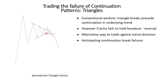The failure of the continuation breakout can sometimes be anticipated. First, it is important to look at correlating markets. For example, the Aussie dollar may have broken down a few days ago but the New Zealand dollar is attempting to break out of a triangle pattern. In this case, the breakout attempt in the New Zealand dollar may prove to be a bull trap since both currencies typically go in the same direction. So always look for correlating markets when anticipating a triangle or other continuation pattern failures.